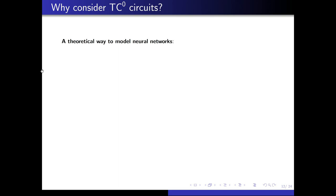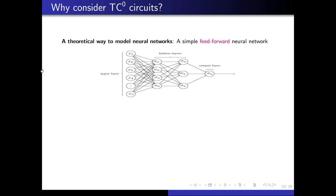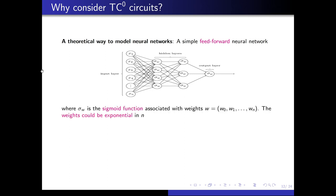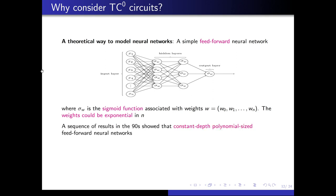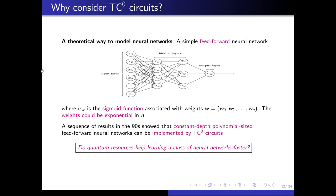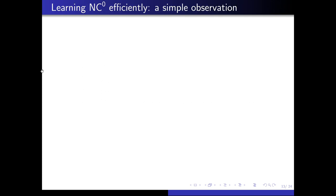TC0 is a theoretical way to model neural networks. A simple feed-forward neural network takes inputs x_1 to x_n with sigmoid functions and weights w_0 to w_n, where weights could be exponential in N. A seminal result from the 90s showed that feed-forward neural networks are morally equivalent to constant-depth polynomial-size threshold circuits. So if you're not comfortable with neural networks, you can think of TC0: unbounded fan-in, OR, and majority gates. The question we ask is: do quantum resources — quantum examples or quantum membership queries — help learn the class of neural networks faster?